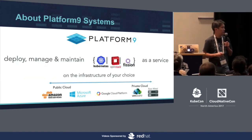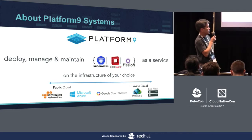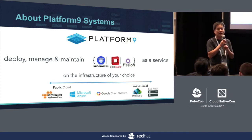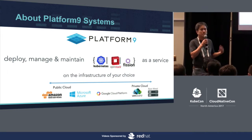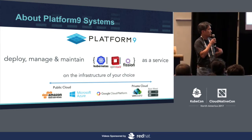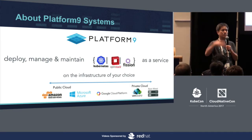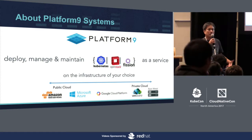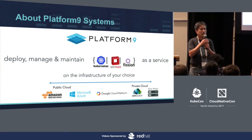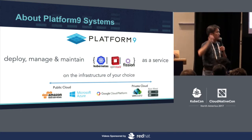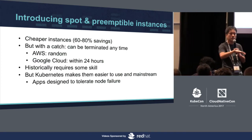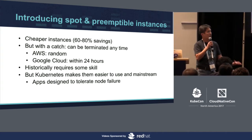To motivate our talk, let me give you a quick introduction to what we do at Platform 9. We are in the business of running open source software as a service for our enterprise customers, and we specialize in infrastructure management. We offer Kubernetes, OpenStack, and Fission as an integrated product. What makes us unique is we run the control plane separately from the data plane so that our customers can run the data plane on the infrastructure of their choice, including bare metal or public cloud instances. We host the control plane and run it as a service, and we're currently migrating all of our control plane services from VMs onto containers running on Kubernetes on the public cloud.